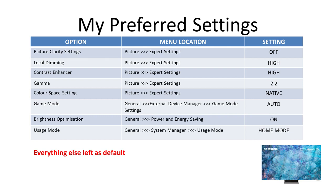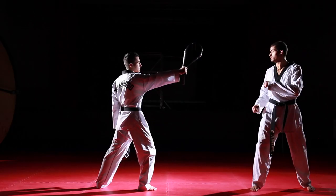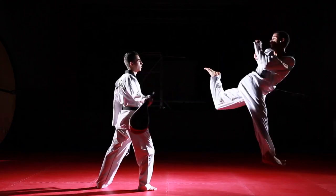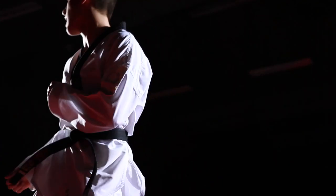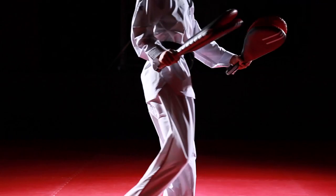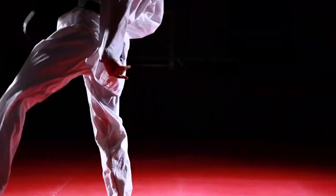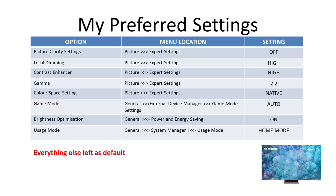Here are my preferences — if I've not mentioned a setting, I've left it as default. First: Picture Clarity Settings, previously called Auto Motion Plus. It's supposed to smooth the judder out of fast-moving images and may work well for live sports, but it looks terrible for movies which are mostly shot at 24 frames per second. You risk the awful soap opera effect, so I recommend this is turned off.